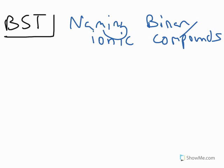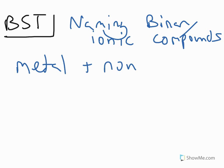Hi, I'm a Bulliston Tutor, and in this video I will be showing you how to name a binary ionic compound. A binary ionic compound means to have a metal and a non-metal, and then they react to form a compound.